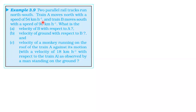From NCRT textbook, let us solve problem example 3.9 from the topic motion in straight line. Two parallel rail tracks run north-south. Train A moves north with a speed of 54 kmph and train B moves south with a speed of 90 kmph.